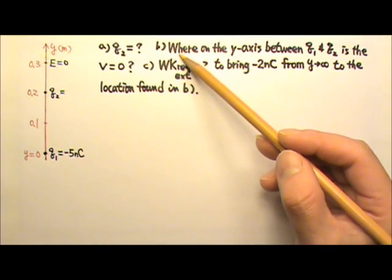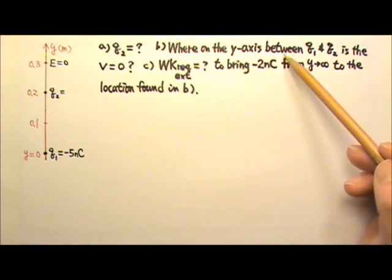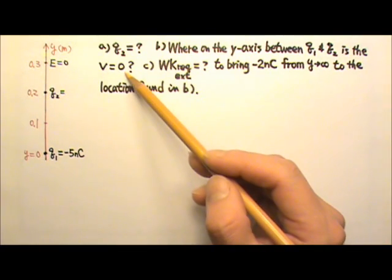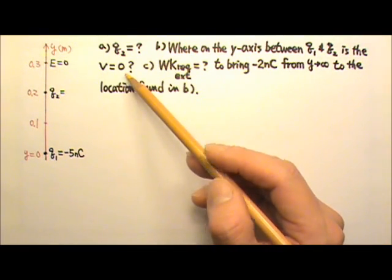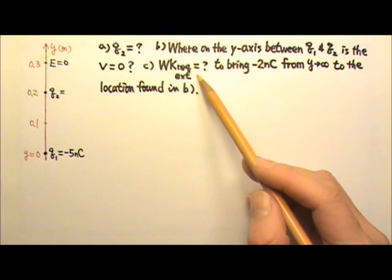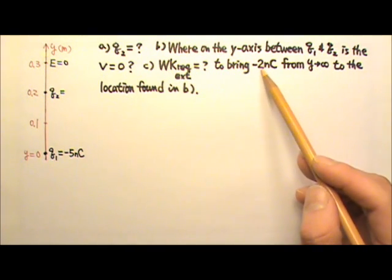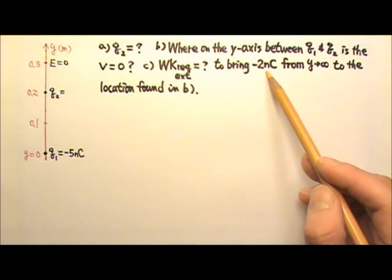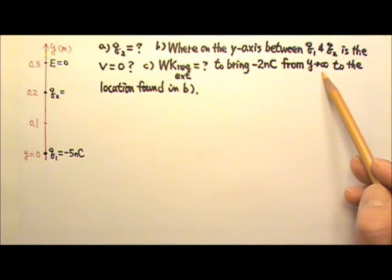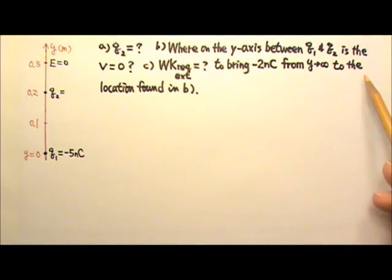Part B: where on the y-axis between Q1 and Q2 is the electric potential zero? Part C: find the work required from an external agent to bring a negative 2 nC charge from y approaches infinity to the location found in Part B.